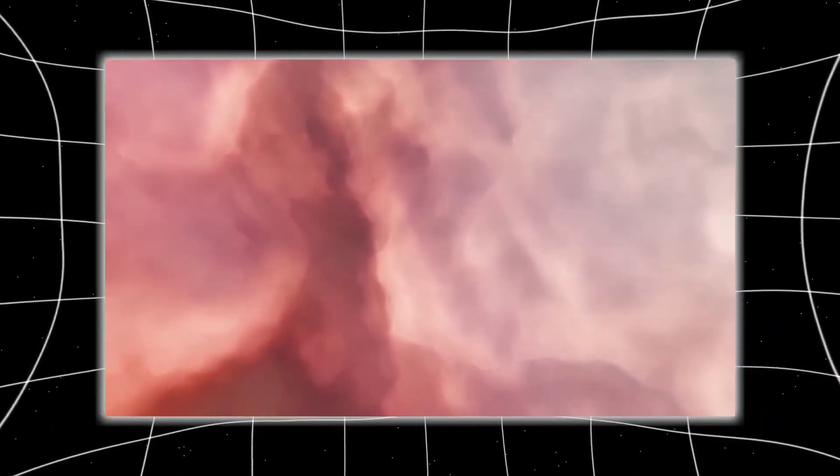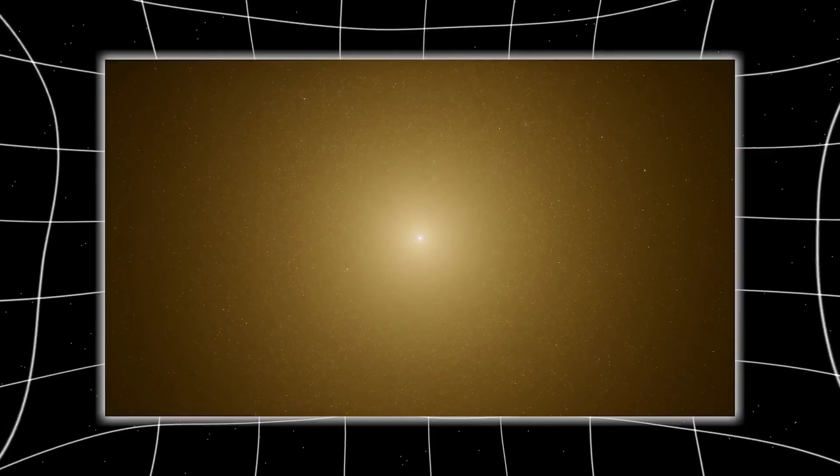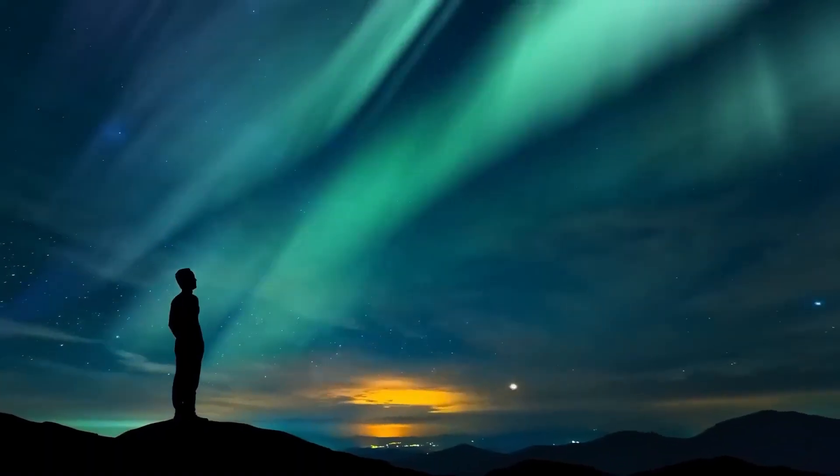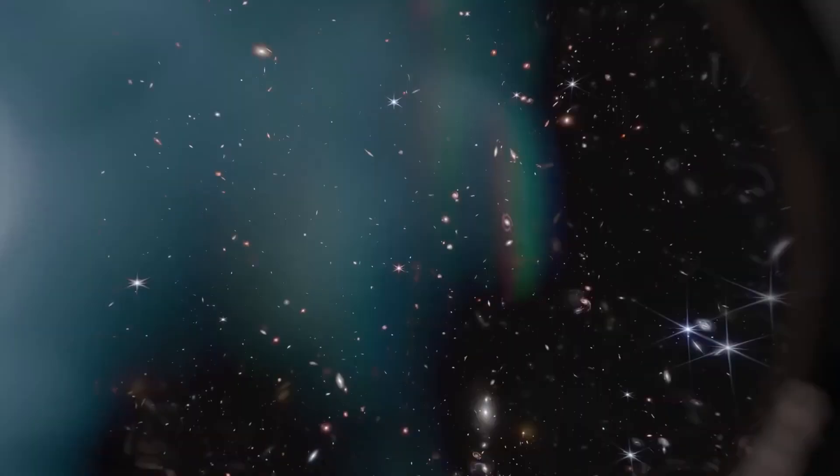jaw-dropping galaxy with spiral arms curling like ribbons of starlight, dense clusters of stars orbiting in perfect harmony, and a monstrous black hole sitting at its heart like a cosmic king. This wasn't a galaxy in the making. It was done, finished, thriving, and it wasn't alone.